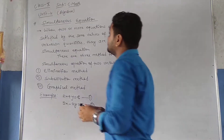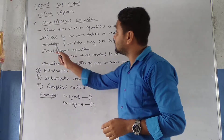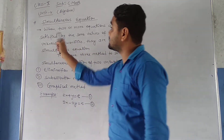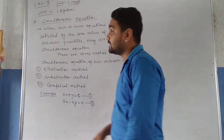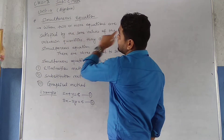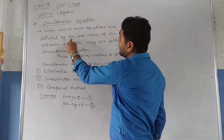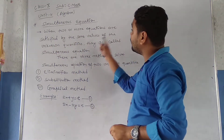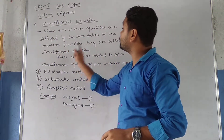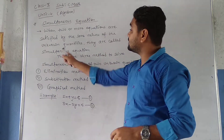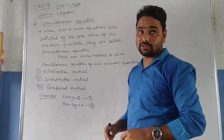What is a simultaneous equation? When two or more equations are satisfied by the same values of the unknown quantities, they are called simultaneous equations.